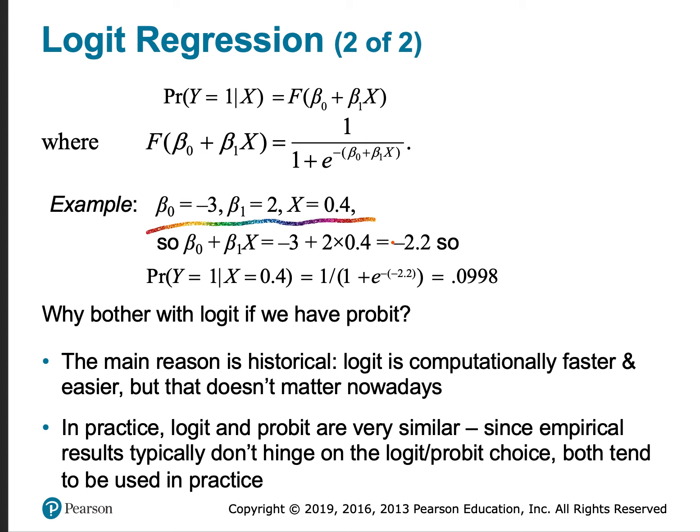So we plug in z equals negative 2.2 into the logit function. So the probability that y equals 1 given that x equals 0.4 is equal to 1 over 1 plus e to the negative of negative 2.2. And that probability is 0.0998 or 9.98%.